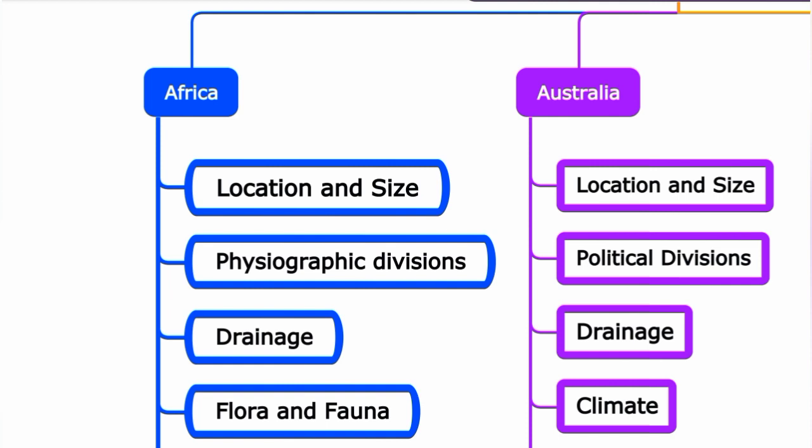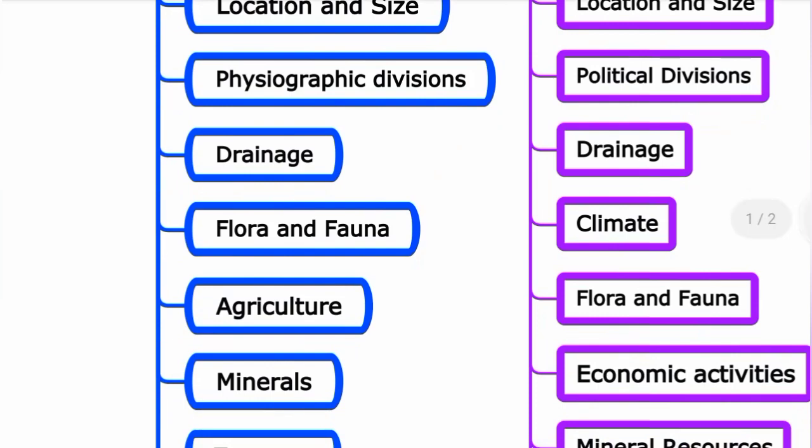Flora and fauna are covered under the climatic zones. Notable trees include the sausage tree among other major species. Agriculture is a major economic activity in Africa, with wheat being a temperate grassland crop.